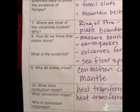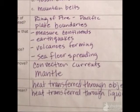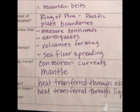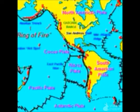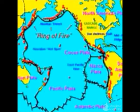Number seven: where are most volcanoes located and why? They're in the Ring of Fire, which is around the Pacific Ocean, around the Pacific Plate, at the plate boundaries. The reason is that when there are boundaries, they can create volcanoes. Here's a picture of the Ring of Fire — all those little red marks are where the volcanoes are.